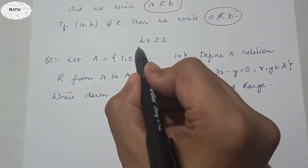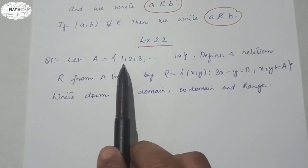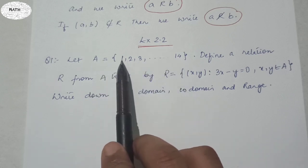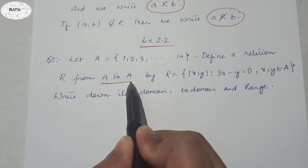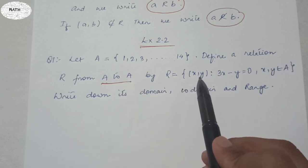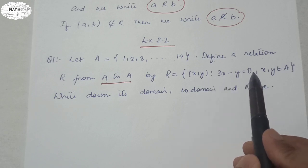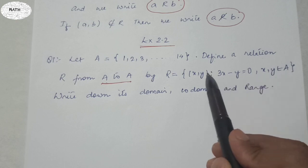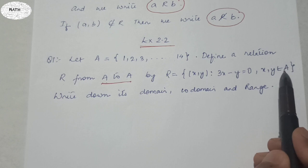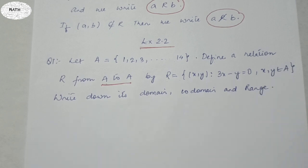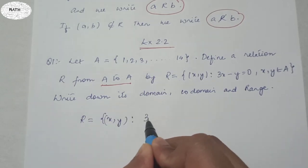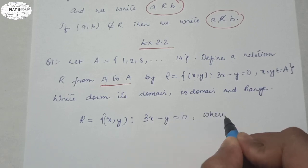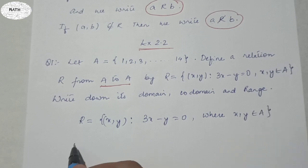Let's do an exercise. Given: let A = {1, 2, 3, ..., 14}. Define a relation R from A to A by R = {(x, y) : 3x − y = 0}, where x, y both belong to A. Notice it's A to A, so there is only one set. We need to write down the relation and then find its domain, co-domain, and range.